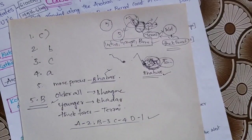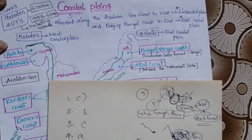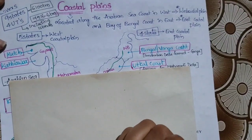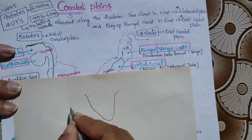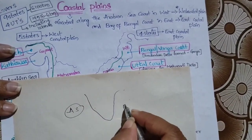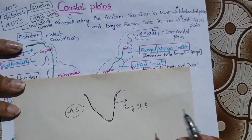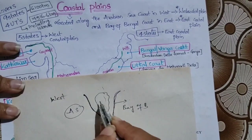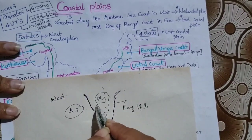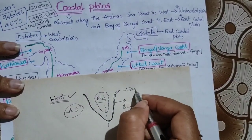Those are the pattern of questions expected from the Great Northern Plains. Now let's discuss coastal plains. Coastal plains are the plains we see along the coast of India — along the Arabian Sea and the Bay of Bengal. The plains on the west side of the Deccan Plateau are called West Coastal Plains, and on the east side are called East Coastal Plains.